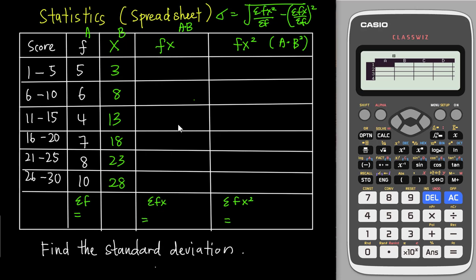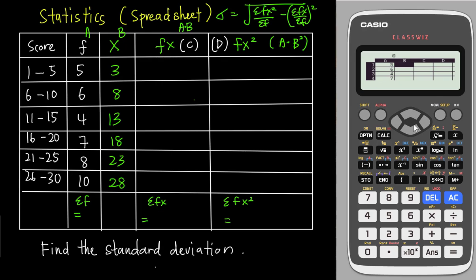Each row in the spreadsheet corresponds to columns A, B, C, and D. So fx will be your C value and fx² will be your D value. Let's insert the frequency values first: 5, 6, 4, 7, 8, 10. Then go back to column B to insert the mid-interval values: 3, 8, 13, 18, 23, 28. Make sure all data entered is correct.